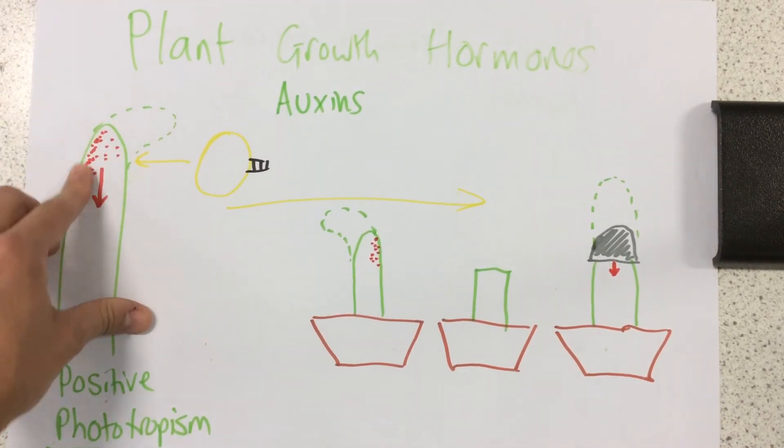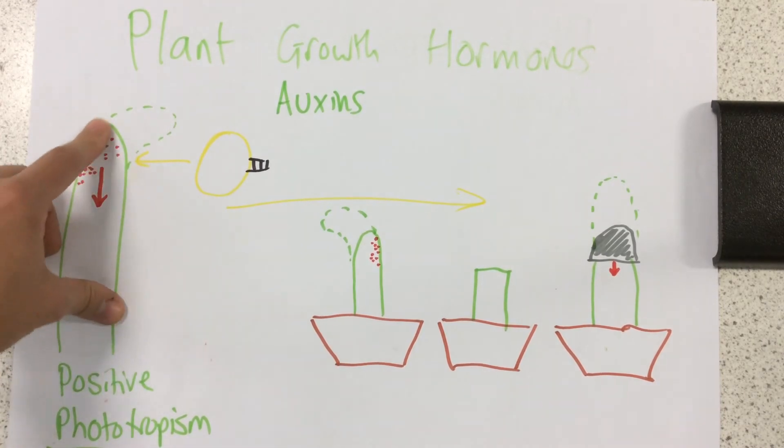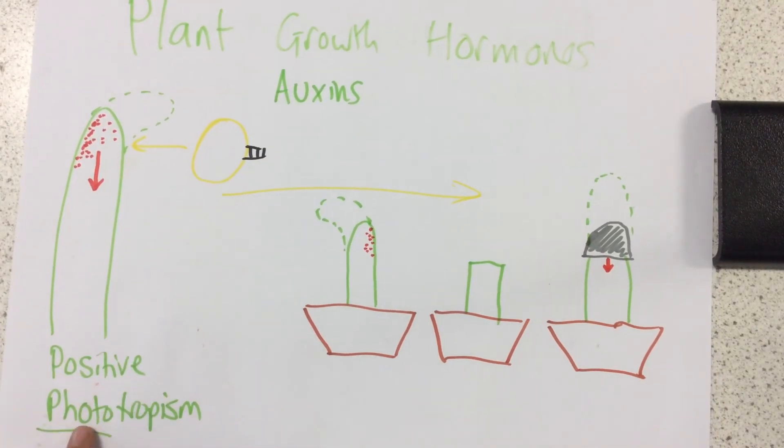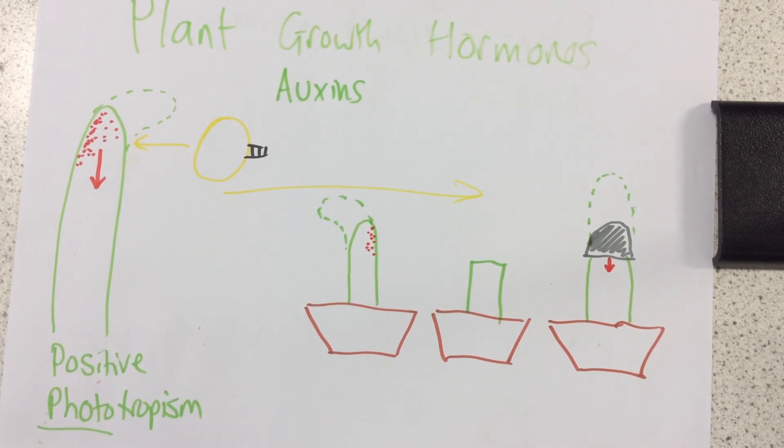They accumulate, auxins accumulate in the dark side, so away from the light, and they encourage growth. And positive phototropism means growing towards the light. Thank you.